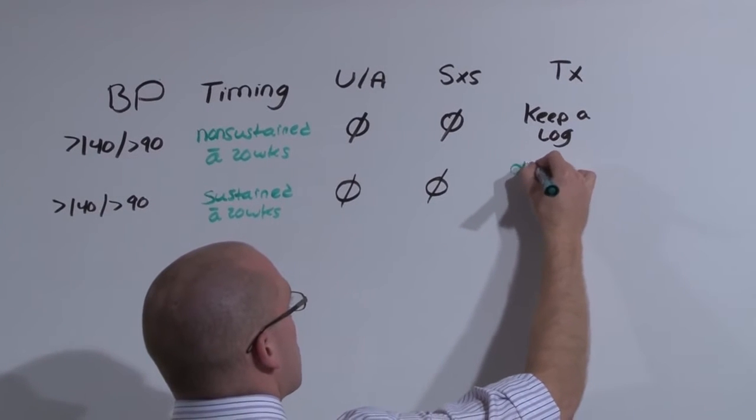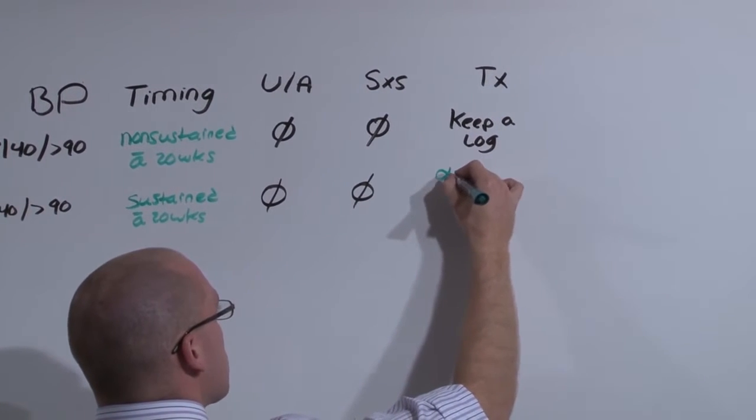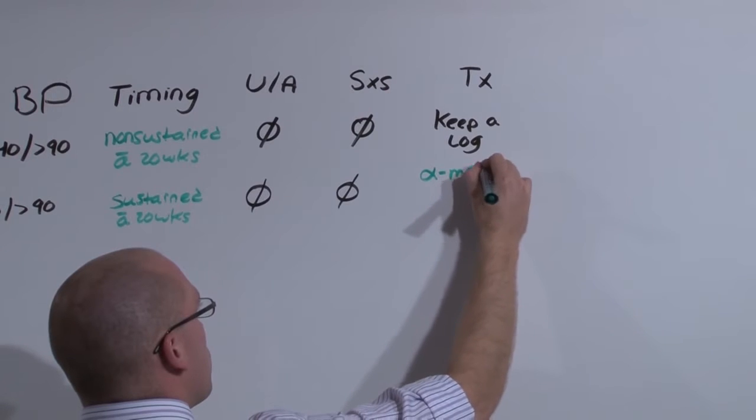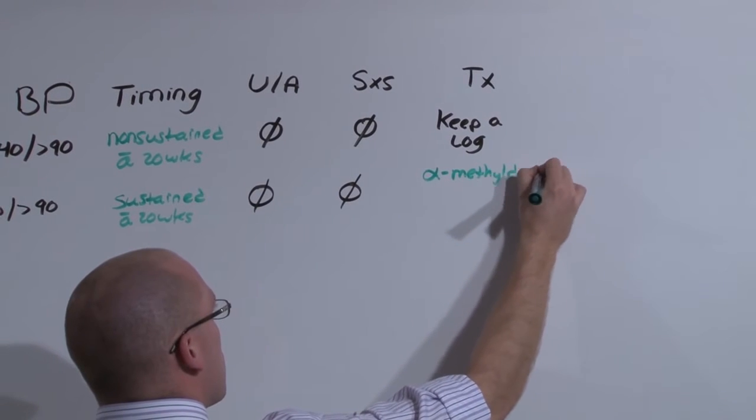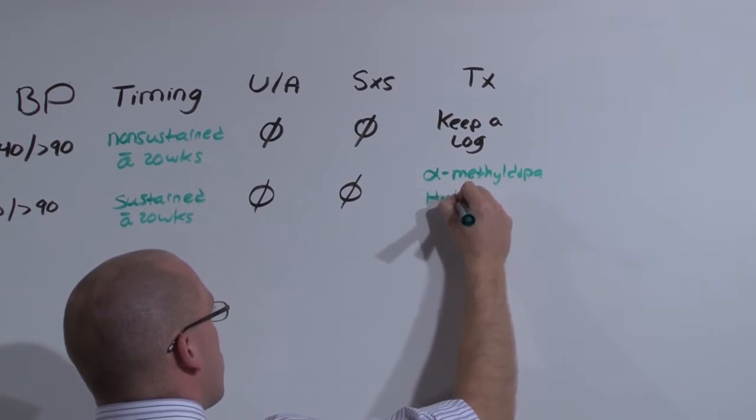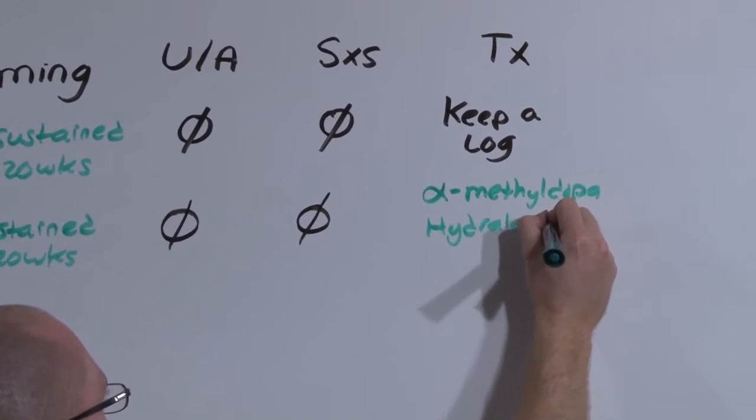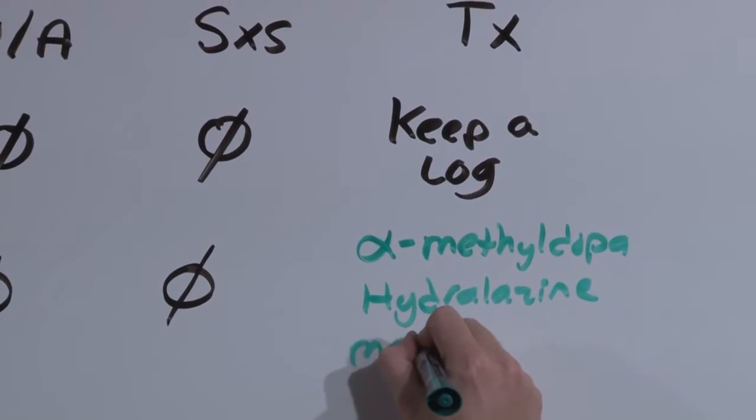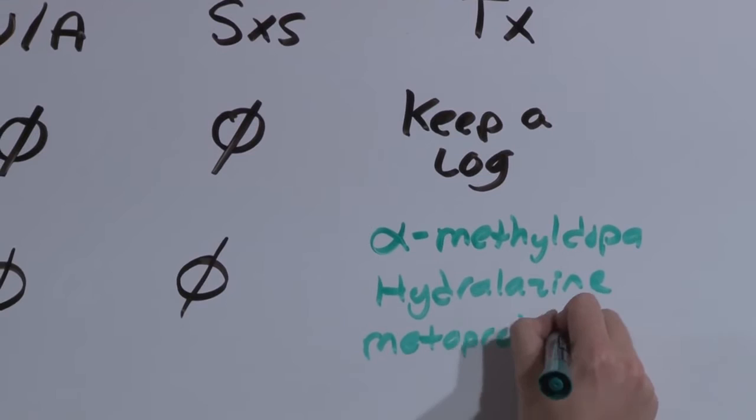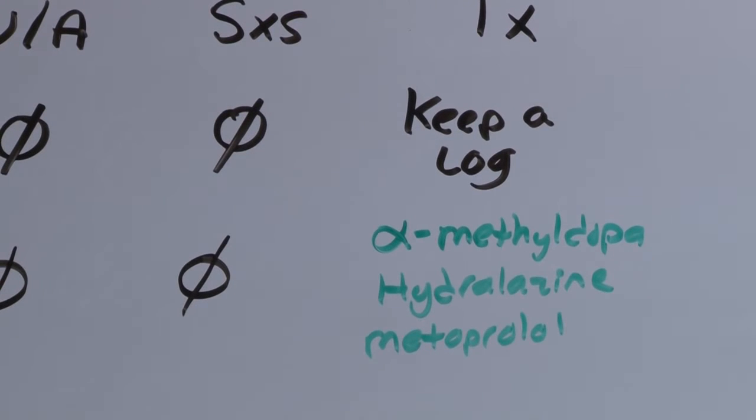The only difference between normal chronic hypertension as a medical disease and treating it in the obstetrics patient is that you have to use medications that are different. We talked about this in the medical disease OB lecture. Alpha-methyldopa, hydralazine, and metoprolol are all class C, but they don't hurt baby and they can be used to control mom's blood pressure.